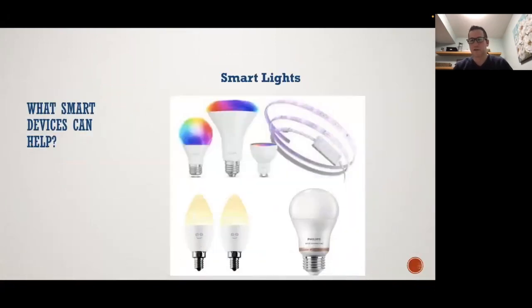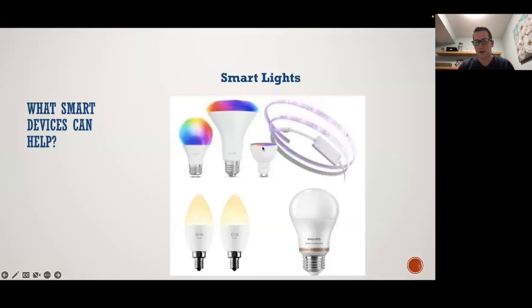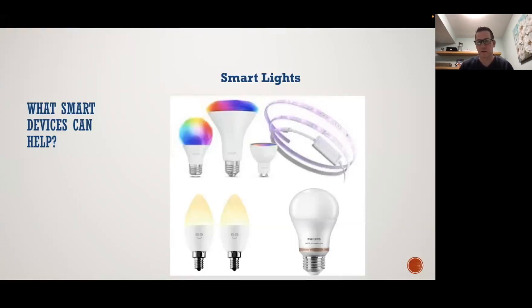Some of the smart devices you can use are lights, which are a very popular one. When they first started out, they only had the regular bulb, but now they've changed it — you have colored ones, chandelier type, GU10 ones, and strip lighting. The benefit of having a smart light is that you're able to control everything either on your phone or through voice commands via Google: turn off the lights, turn on the lights, turn down the lights, change the color.